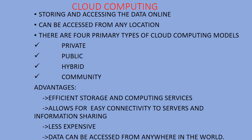We have four types of cloud computing models: private, public, hybrid, and community. Private cloud is owned by one organization, for example a company. Public cloud — like Google Drive, Gmail, Yahoo — is common to everyone. Hybrid is a combination of these models.